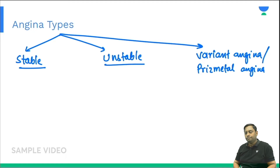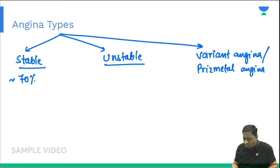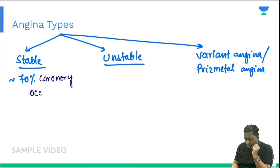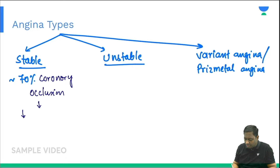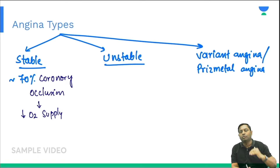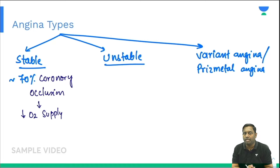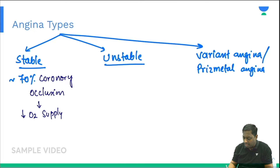In stable angina, there is around 70% coronary occlusion. Because of this occlusion, there will be a decrease in the oxygen supply. Distal to the occlusion, oxygen supply will be reduced, the tissue will undergo hypoxia, and will manifest with pain. In unstable angina, the occlusion could be around 90%.